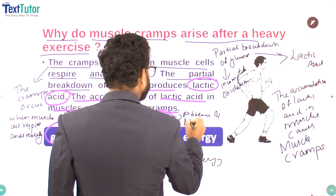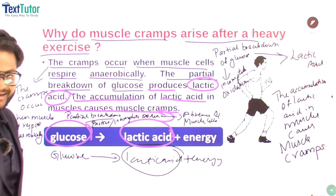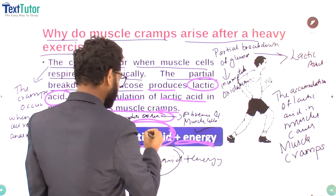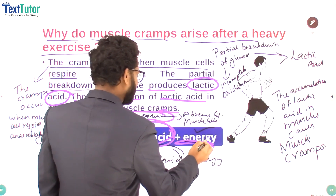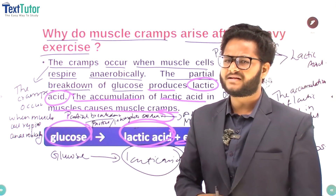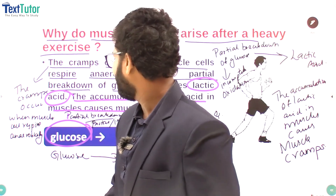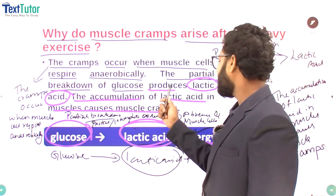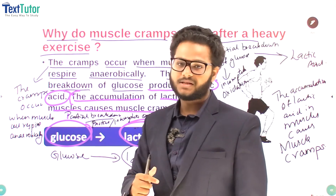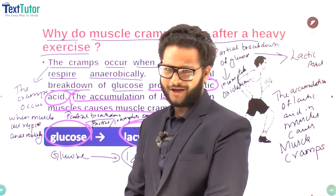In the absence of oxygen, the incomplete oxidation or breakdown of glucose produces lactic acid. Lactic acid is very painful and causes cramps. This is the reason why after heavy exercise we get muscle cramps — accumulation of lactic acid in muscles causes muscle cramps.